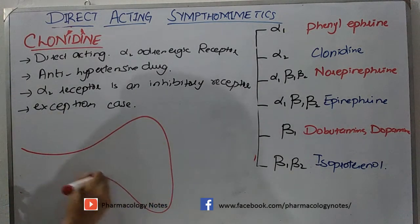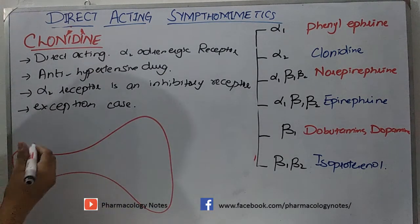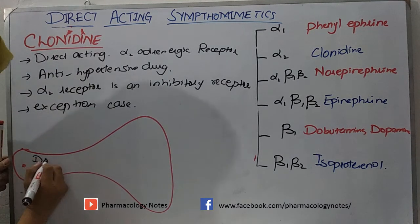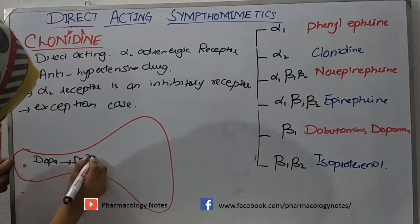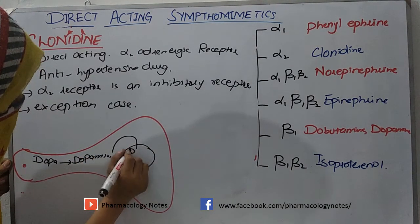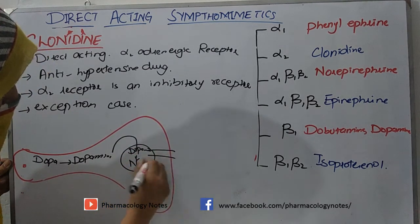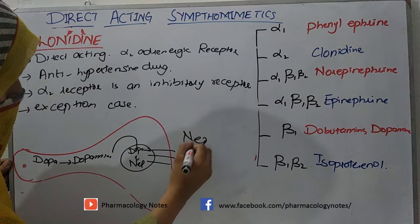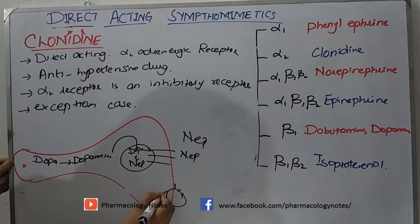For this purpose, we have to draw a neuron in a synaptic cleft. Remember that there is DOPA, which is converted into dopamine. This dopamine is stored in vesicles and then converted into norepinephrine. The norepinephrine is released across the membrane into the synaptic cleft, where it acts on receptors, and there is also a reuptake mechanism.